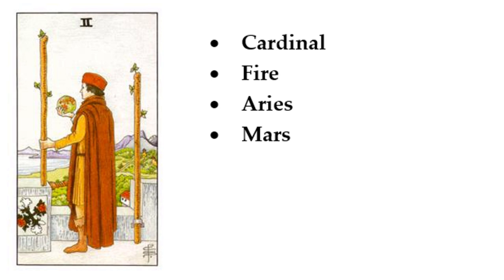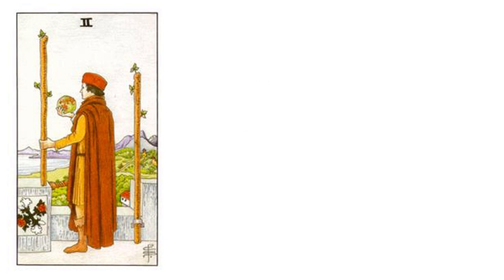The main card's interpretation gives us the what — planning and progress. But the element, star sign and planet gives us the how. How is this planning and progress being delivered or expressed? In a bold, direct, go-get-and-fire-starter fashion. It's also worth bearing in mind that for this particular card, we have a perfect combination in the form of Aries and Mars, since Mars is the ruling planet of Aries. This only strengthens this card, but a combination as such is certainly not the case for all the minor arcana. In fact, many feature combinations that are in detriment, which can be extremely significant.